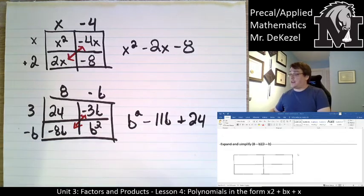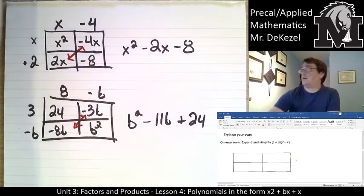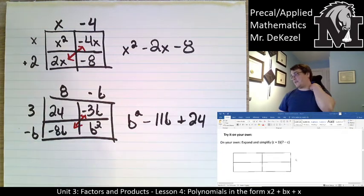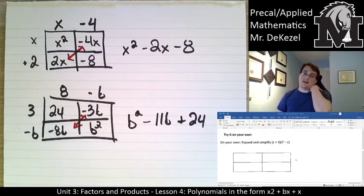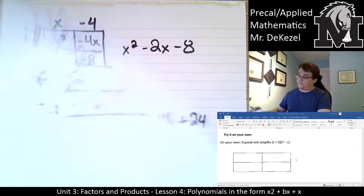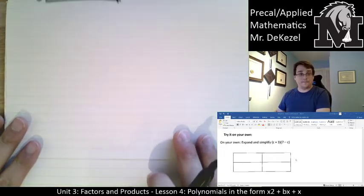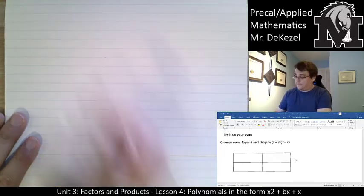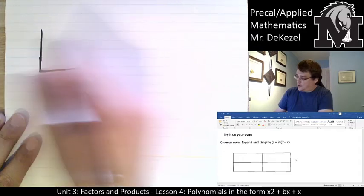Why don't you try the next one on your own, right here. On your own, expand and simplify: c plus 3 times 7 minus c. And then when you're done on pause, you can do it together. Okay, let's do this thing. Let's draw our box.